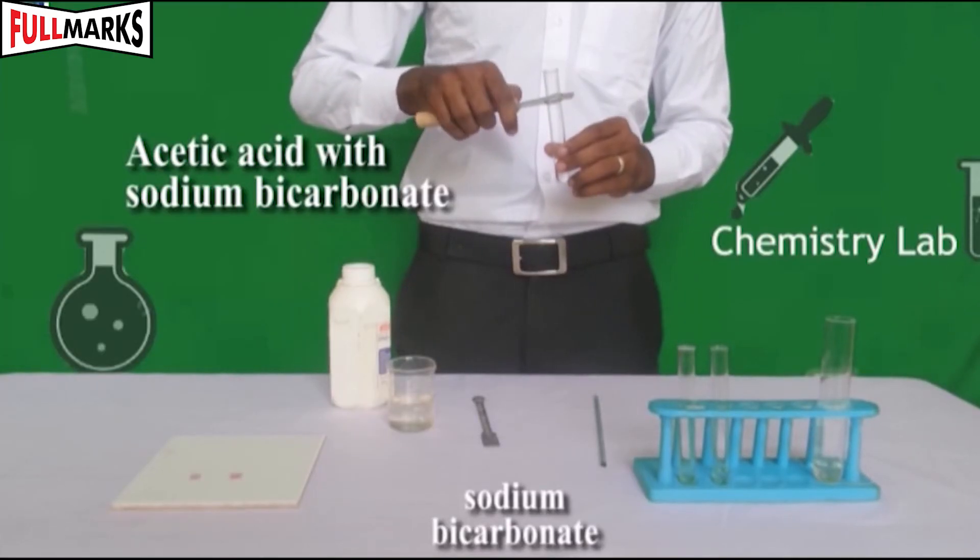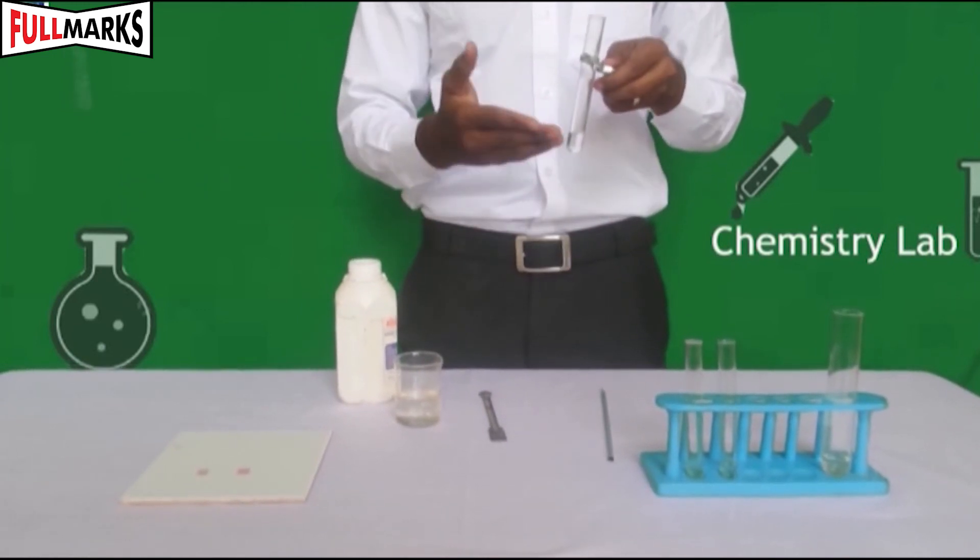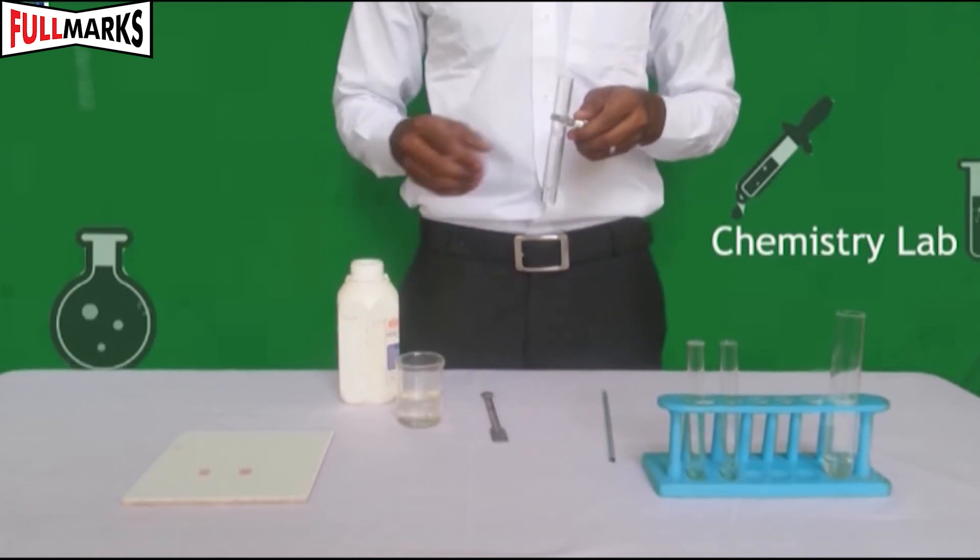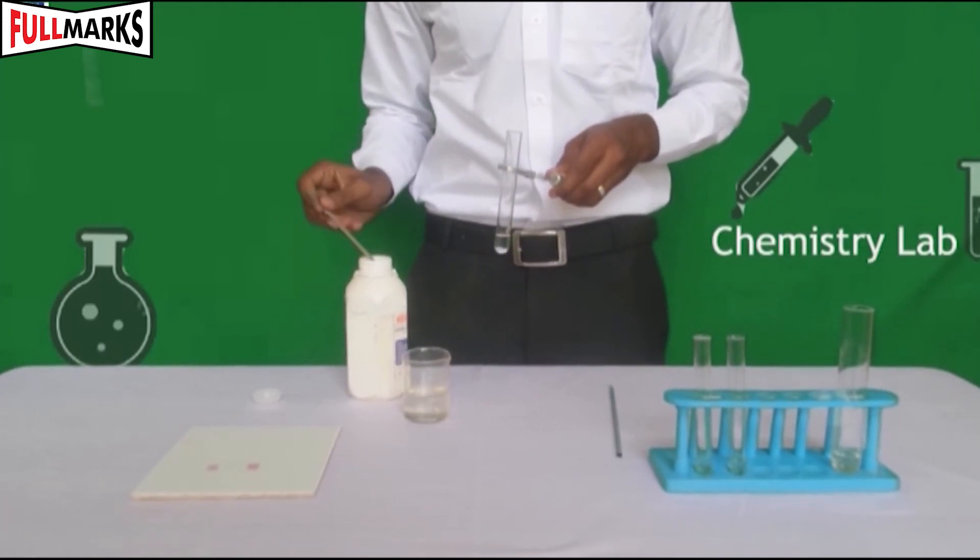Test 4: Acetic acid with sodium bicarbonate. Take a pinch of sodium bicarbonate in a clean test tube, add 1 ml of dilute acetic acid in the test tube.